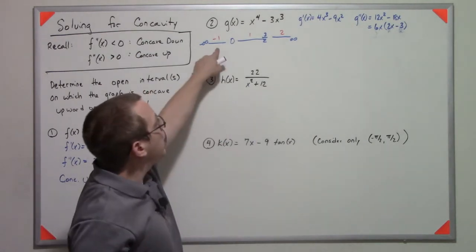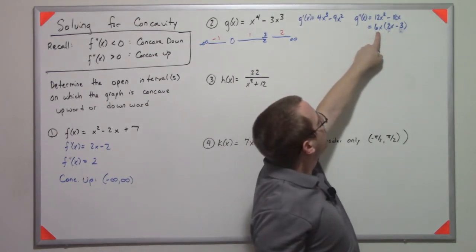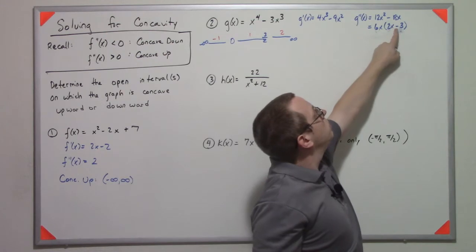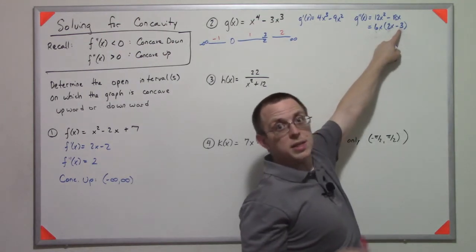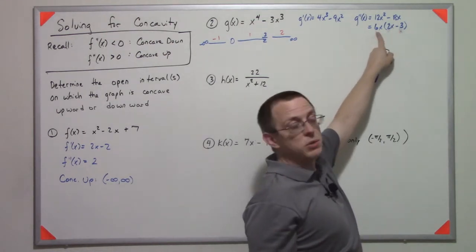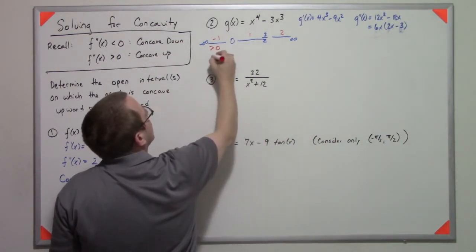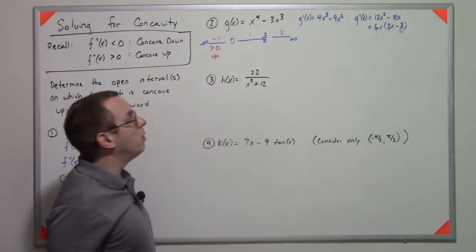And plug those values into the second derivative, and that will tell us about the concavity. So if I pick negative 1, that's negative 6, negative 2. So negative 2 minus 3 is negative 5, times a negative 6 is a positive 30. So that tells me that this is concave up here.